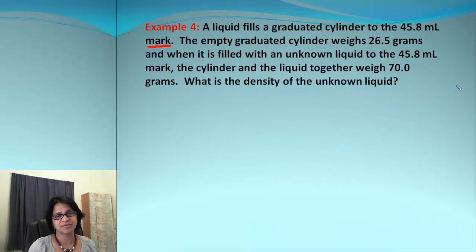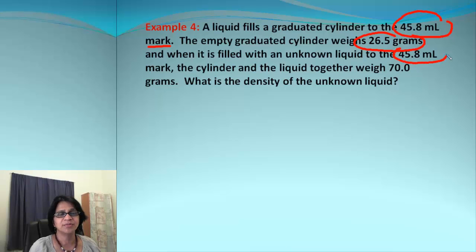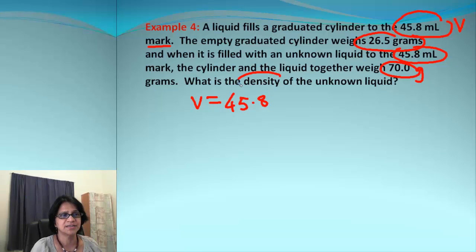Here's an example in which the values are not given directly. Always make it a rule to circle all the values given because that's what you'll be using. If you look carefully, this value is duplicate. It says liquid is filling the graduated cylinder up to that cylinder. So the volume of liquid is 45.8 milliliters.